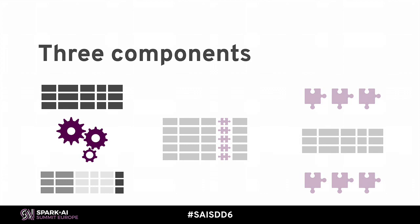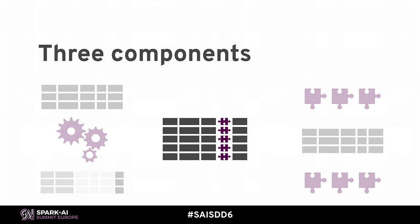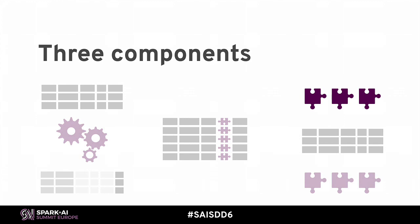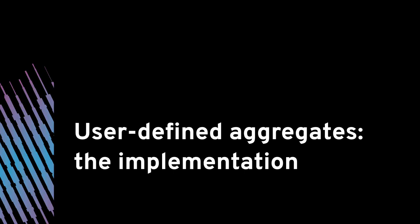There are three components to a user-defined aggregator. The first is defining the actual aggregation logic itself. The next is declaring user-defined types for the internal working representation and also for presenting user-visible results. And lastly, providing definitions for serialization and deserialization of the live representation of working memory and then getting it back out again.